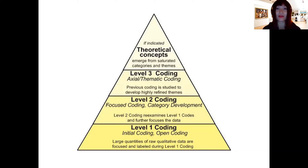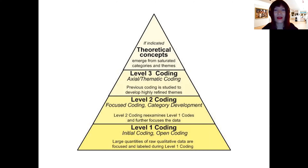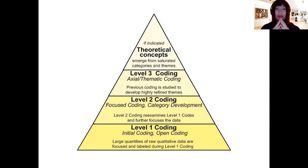This is a quite famous model of the coding process. We have different levels of coding. If your research project is very simple, you could do fewer levels of coding, but for your dissertation I would recommend you to do these three levels of coding, or at least two levels. By saying one, two, or three levels, it refers to how many rounds of coding you would do, and also how abstract your coding would get. The pyramid shape here represents how descriptive your coding would be.